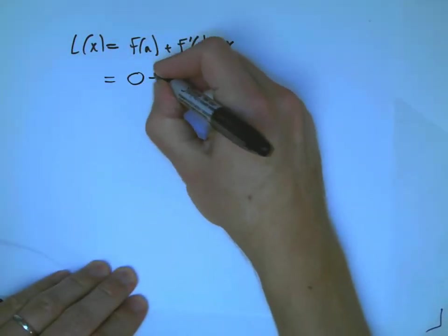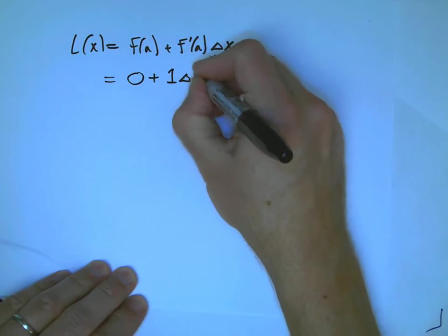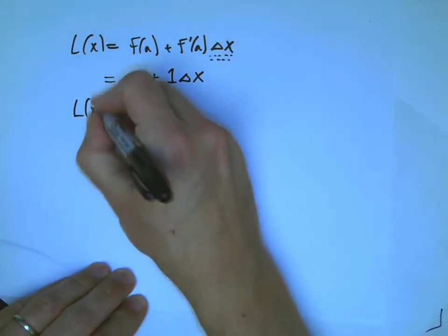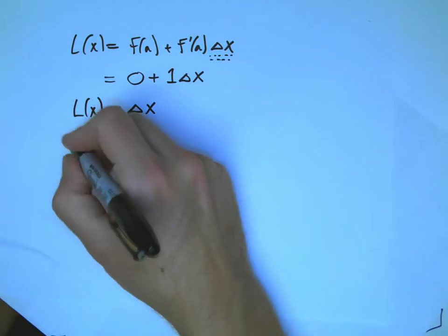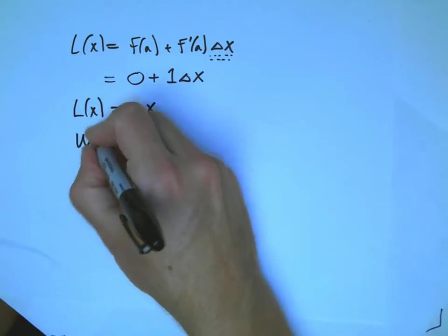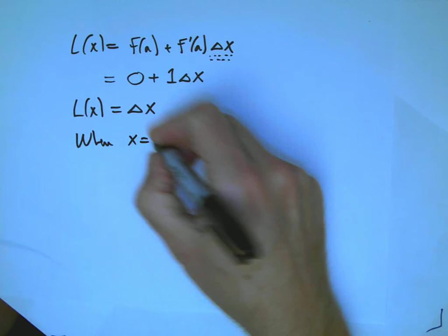So, the alternate way to do it, just slightly different in terms of the algebra, but it is a little bit different in terms of the idea. Here, L of x happened to be exactly delta x.